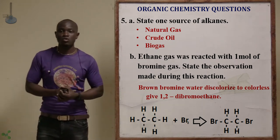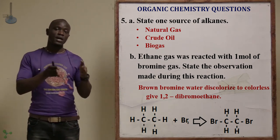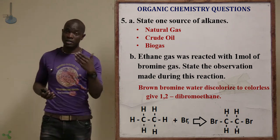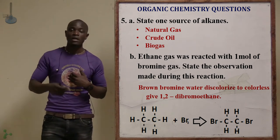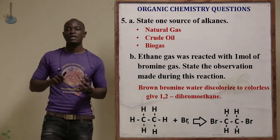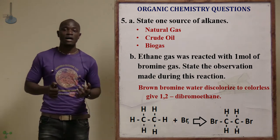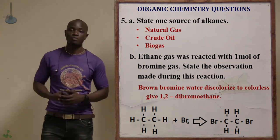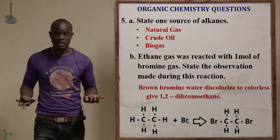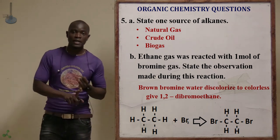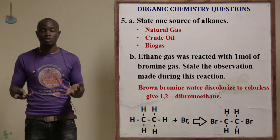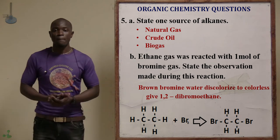Question 5A asks to state one source of alkanes. Sources of alkanes include natural gas, crude oil, and biogas. From biogas, we can obtain methane, propane, ethane, and butane gas. From crude oil, we obtain alkanes by separation, and also from natural gas.